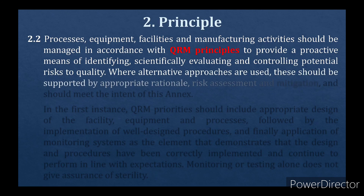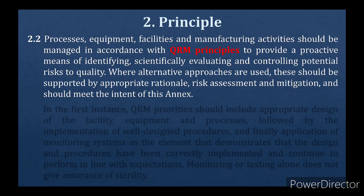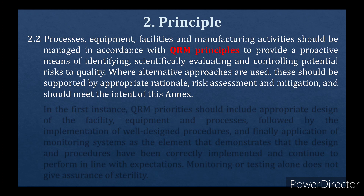Process, equipment, facilities and manufacturing activities should be managed in accordance with Quality Risk Management (QRM) principles to provide a proactive means of identifying, scientifically evaluating and controlling potential risks to quality. Where alternative approaches are used, these should be supported by appropriate rational risk assessment and mitigation, and should meet the intent of this annex. The main focus of this annex is on contamination and contamination control strategies.